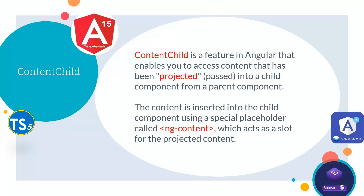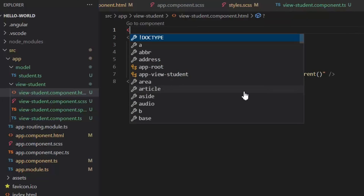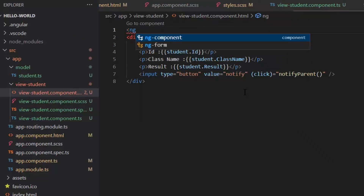Next we have ContentChild. ContentChild is a feature in Angular that enables you to access content that has been projected or passed into a child component from a parent component. The content is inserted into the child component using a special placeholder called ng-content, which acts as a slot for the projected content. For the ContentChild example we will use our ViewStudent component, and here I'm going to add the ng-content tag before our student.